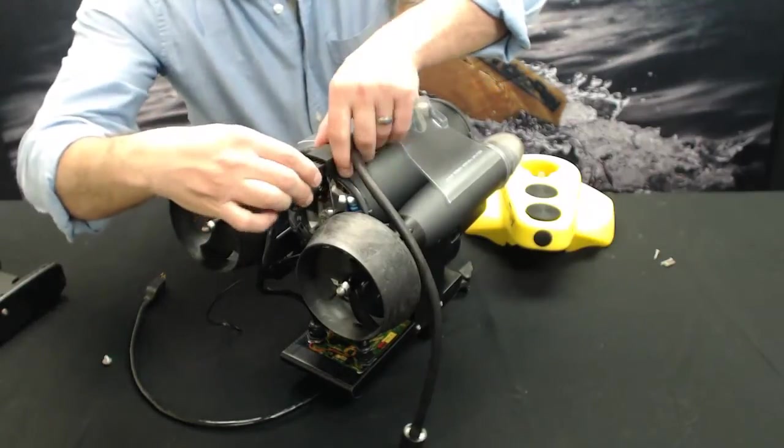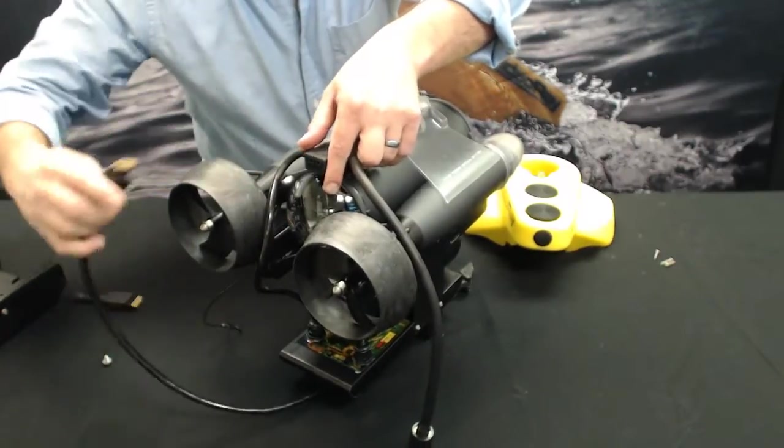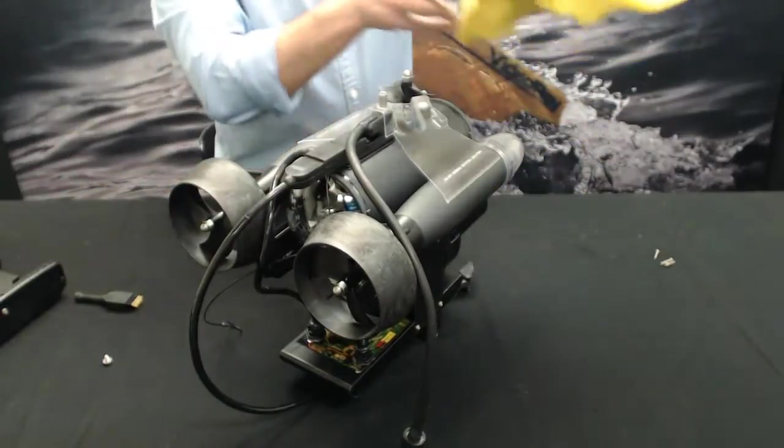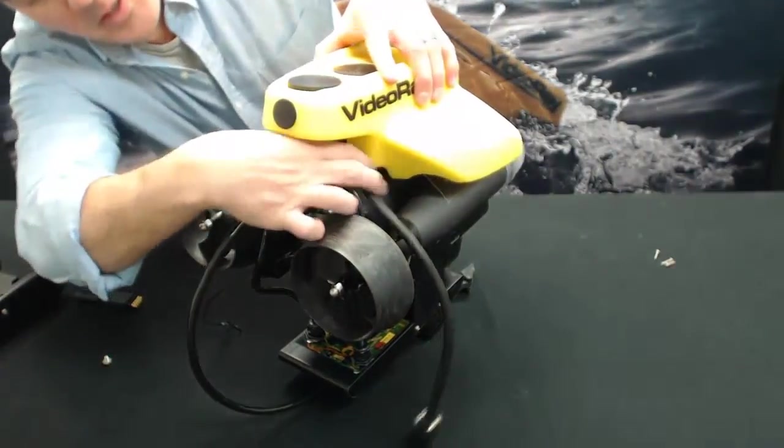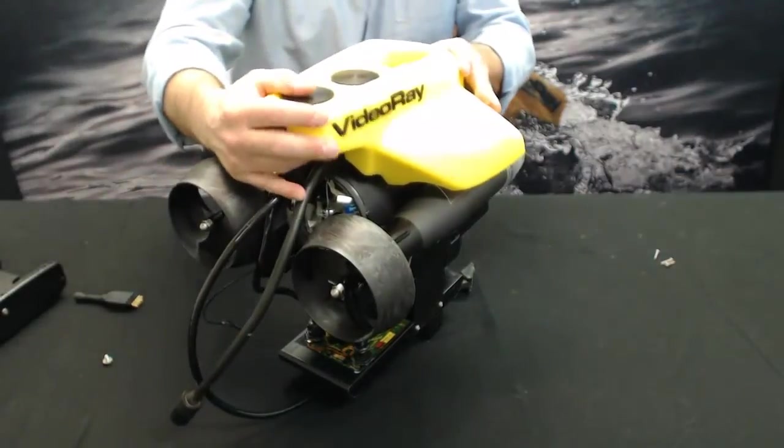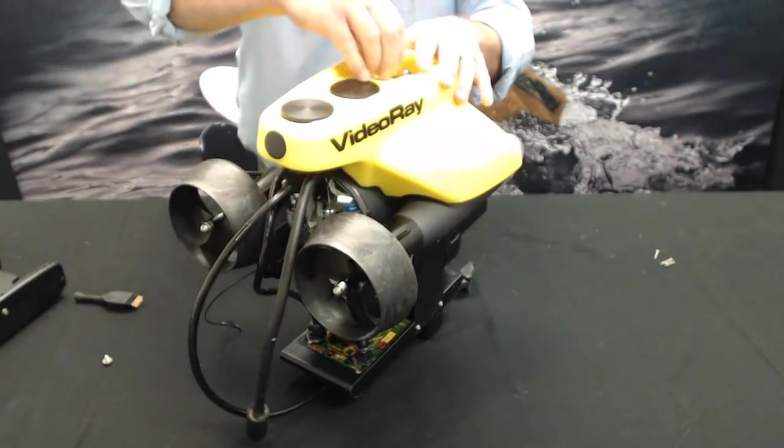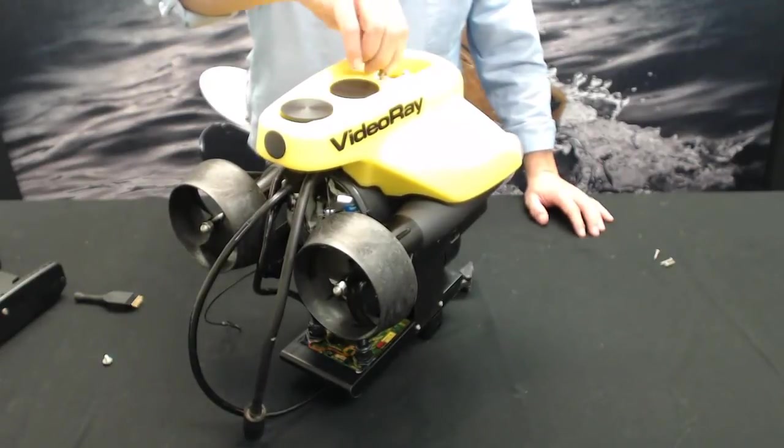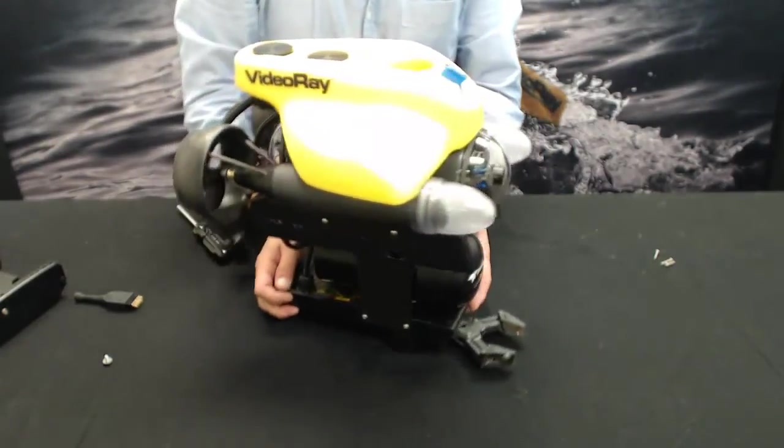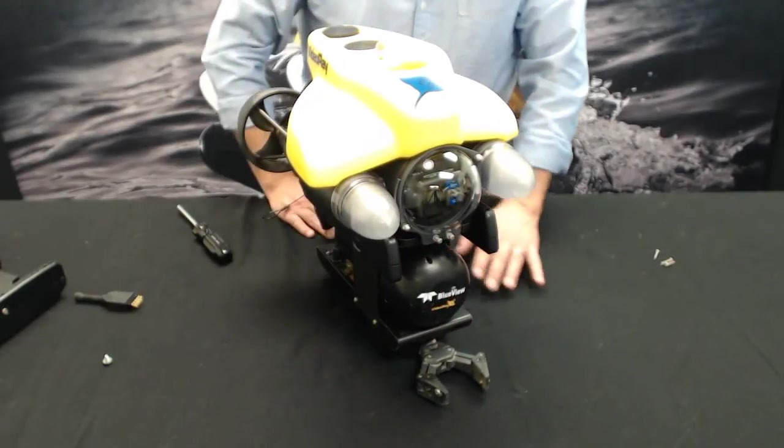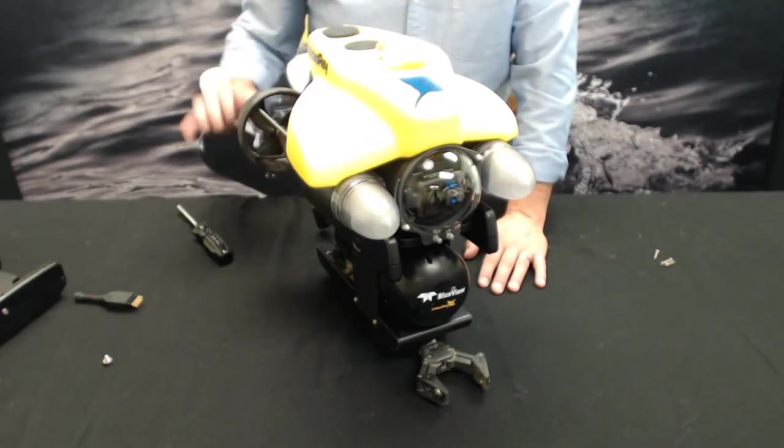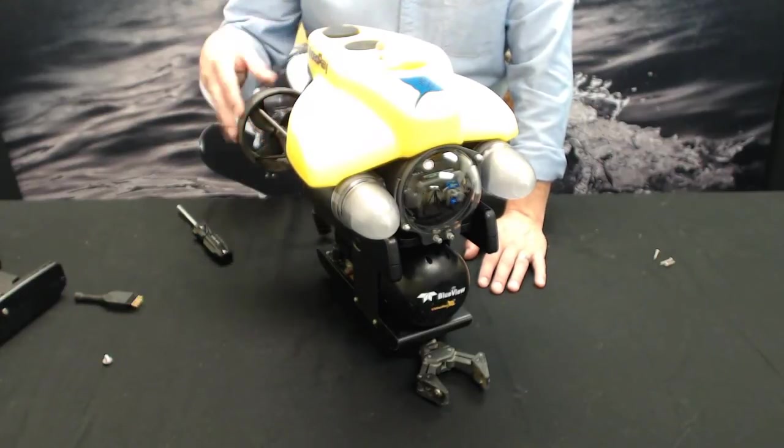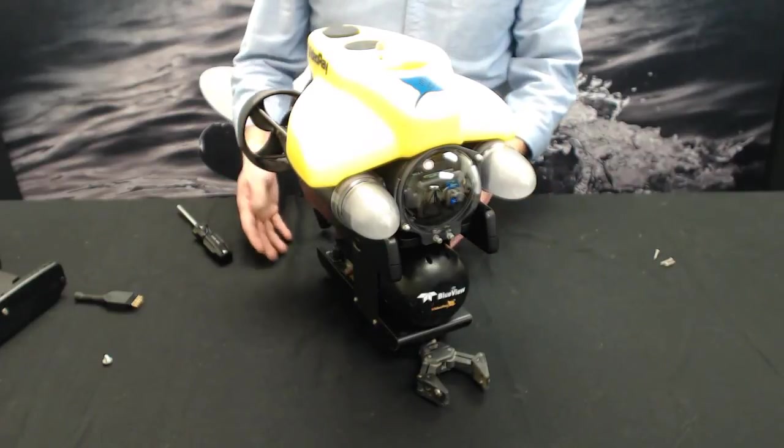Put your float block back on, and now you have multi-beam imaging sonar with the ability to grab and retrieve objects from the bottom. This is one of the more popular setups for law enforcement, government, and military: the sonar with manipulator arm and Pro 4. This is probably one of the best tools we have. You can see in low visibility and grab objects with the power of the Pro 4 thrusters. That's the installation of the BlueView integration skid and manipulator arm working together.